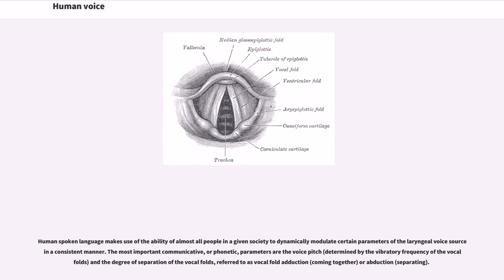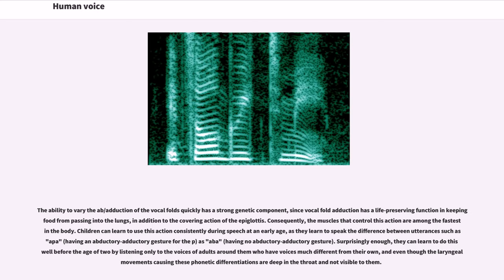Human spoken language makes use of the ability of almost all people in a given society to dynamically modulate certain parameters of the laryngeal voice source in a consistent manner. The most important communicative, or phonetic, parameters are the voice pitch and the degree of separation of the vocal folds, referred to as vocal fold adduction or abduction. The ability to vary the abduction/adduction of the vocal folds quickly has a strong genetic component, since vocal fold adduction has a life-preserving function in keeping food from passing into the lungs, in addition to the covering action of the epiglottis.